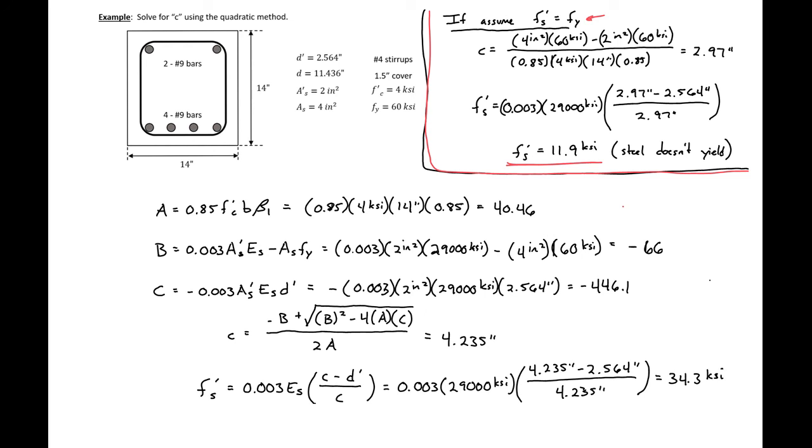These are then the two values that will move forward within our design. So we have our C, and we have our FS prime for the remainder of our design.